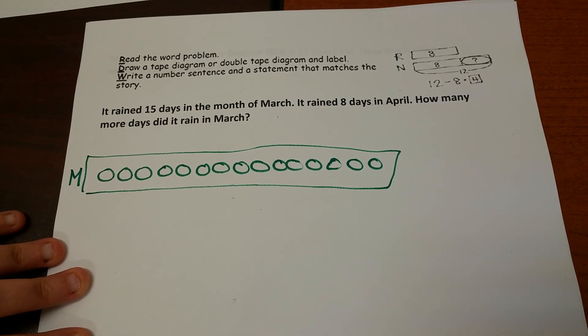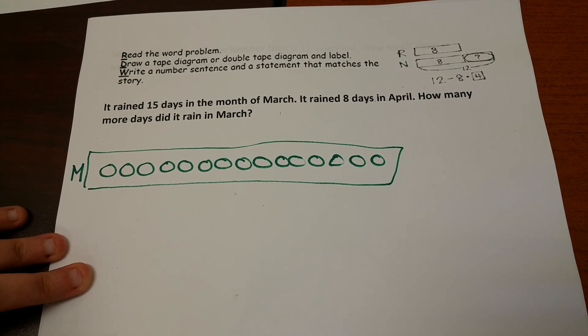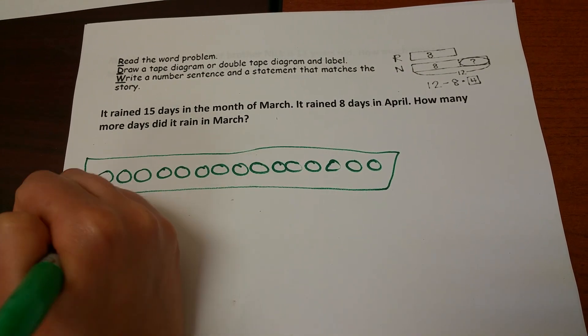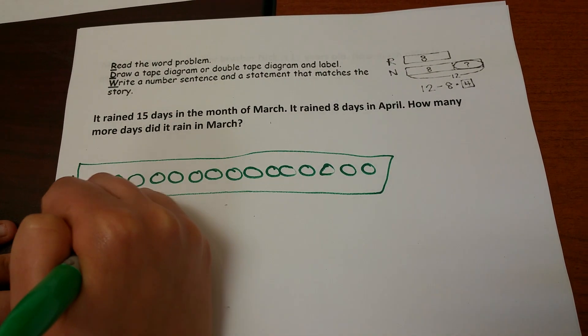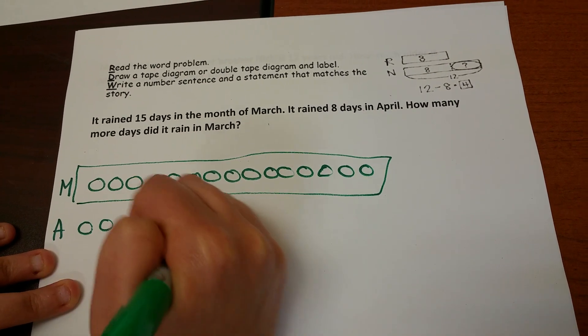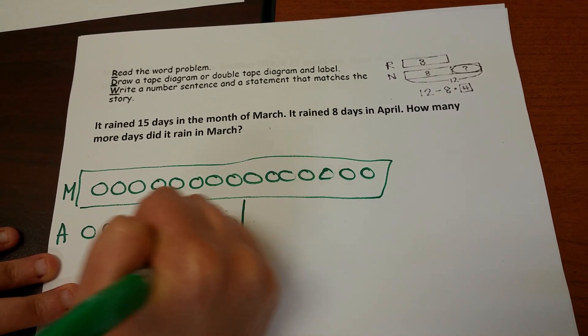This is my 15 days for March. I'm going to label it. It rained 8 days in April, so I'm going to do the same for April. I'll try and line up as best as I can. 1, 2, 3, 4, 5, 6, 7, 8. 8 days in April.